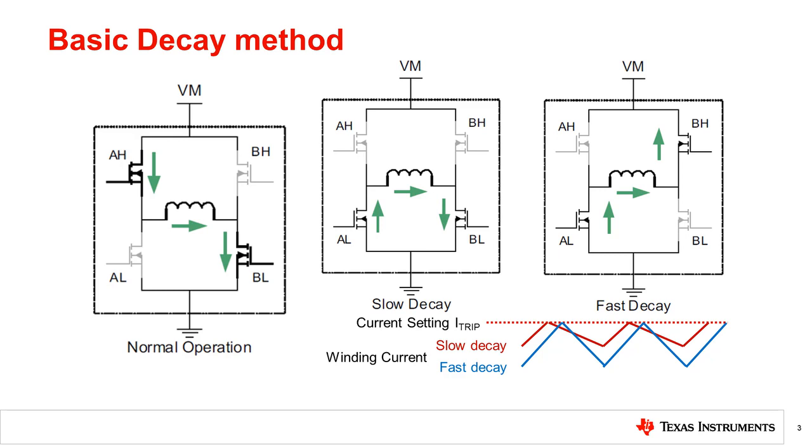In fast decay mode, the stepper motor coil is driven in opposite direction by reversing the H-bridge for a period of time until the PWM off period ends or the coil current is zero.